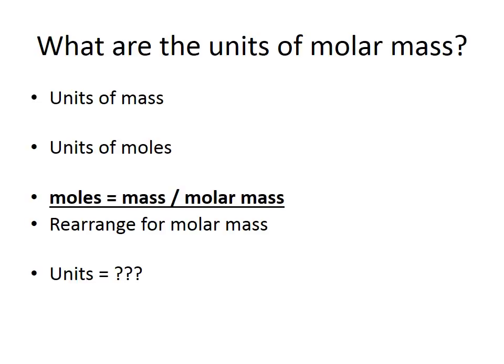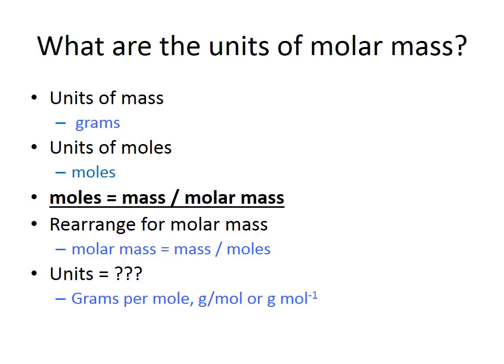What are the units of molar mass? The base unit of mass is grams, and the base unit of amount is moles. Rearranging our formula — moles = mass ÷ molar mass — to solve for molar mass gives: molar mass = mass ÷ moles. So the units are grams per mole, which can be written as g/mol or g·mol⁻¹. All three representations mean the same thing.